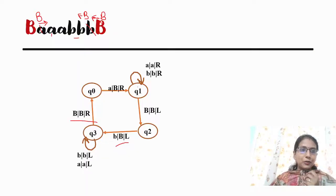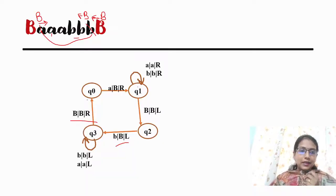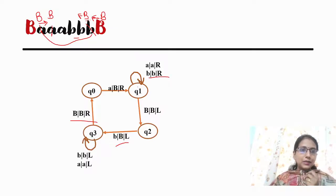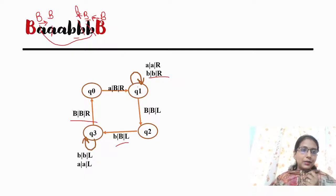This is a repeat of the process. One cycle: I replace blank and use the same transition. This cycle repeats. Now I am going to replace A with blank and move right again. I place A, E, and come back to the correct state.